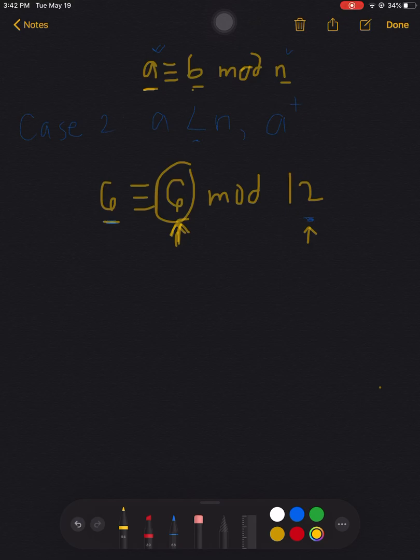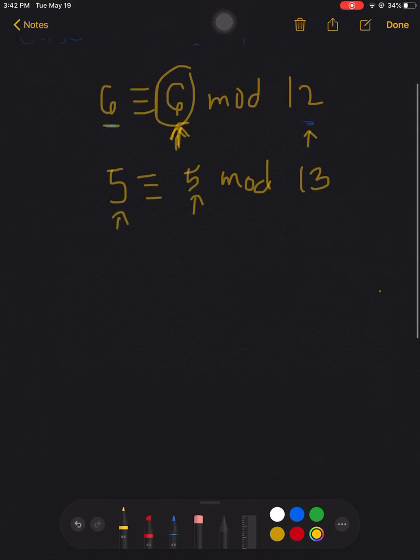So whenever you have smaller number there at the leftmost, smaller number than the number at the rightmost part, always the answer here will just be the same. Easy. Let's have the last case, which is case number 3.